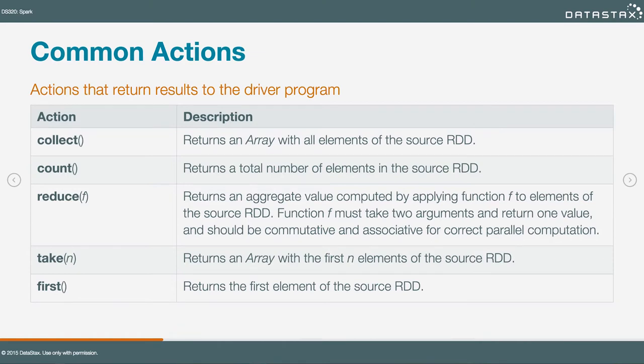Reduce creates an aggregate value by taking some function and repeatedly applying it to pairs of elements and intermediate results in the source RDD. More intuitively, if you had a bunch of numbers in an RDD and you wanted to add them or multiply them, reduce would be the way to do it. You pass a function that says add one element to another, and Spark handles organizing all of the elements and reducing their intermediate results to produce a single number as output.